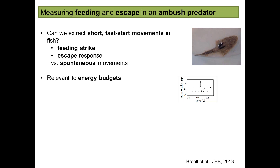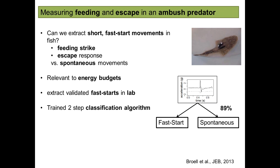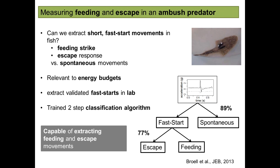We extracted validated fast starts in the laboratory by mimicking a predator, following protocols established in the 90s, and used these to train a two-step classification algorithm. The algorithm differentiates between fast-start movements and spontaneous events with a classification probability of 90%, and then differentiates between escape and feeding behavior with a probability of 77%. In summary, this algorithm is capable of extracting feeding and escape movements in this model species, and we believe this could be translated to different fish species and potentially different behaviors.